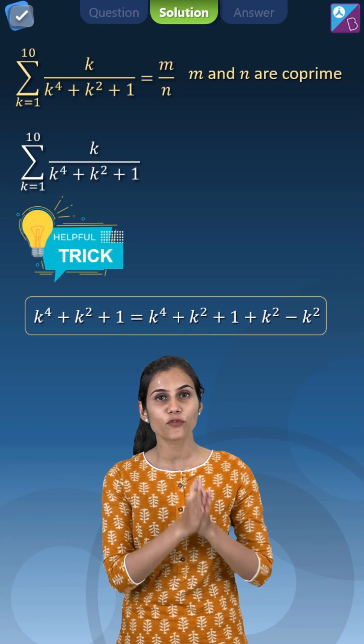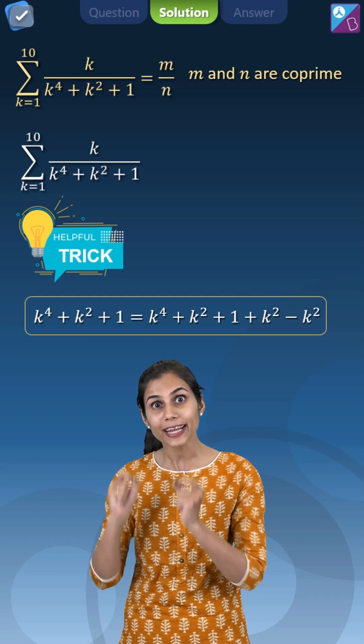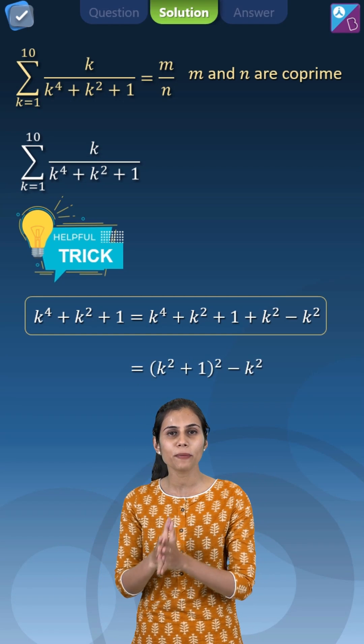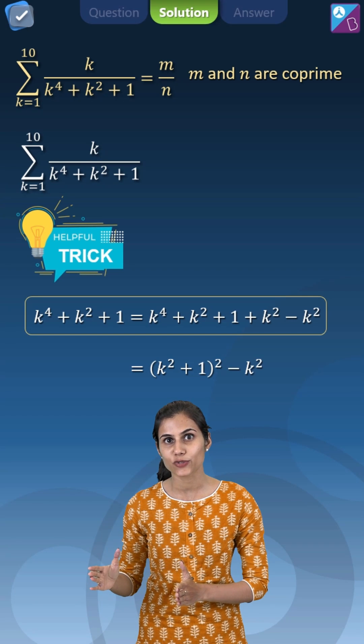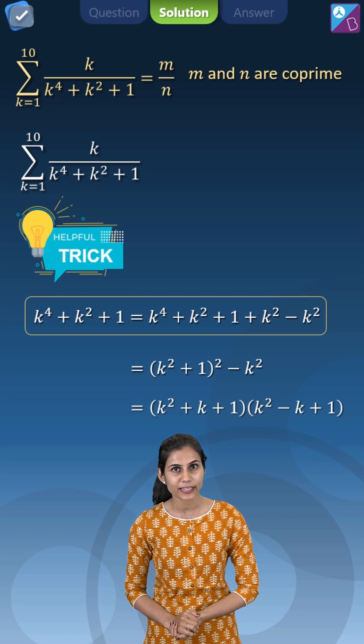Catch hold of the denominator k to the power 4 plus k square plus 1, add a k square, subtract a k square, that will transform it to k square plus 1 whole square minus k square which looks like x square minus y square that is x plus y into x minus y.